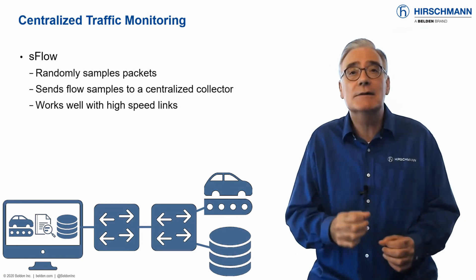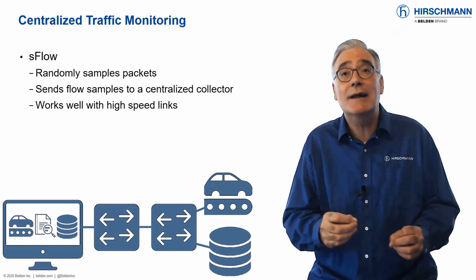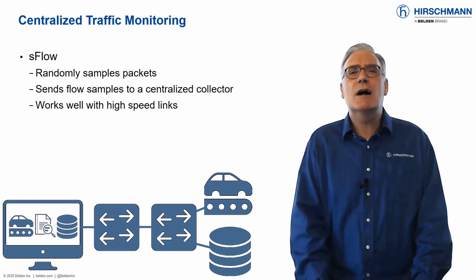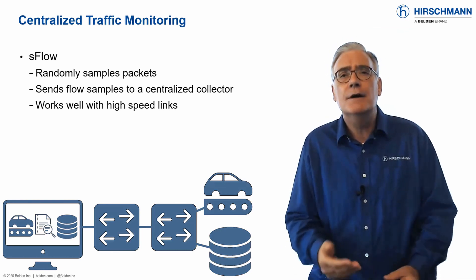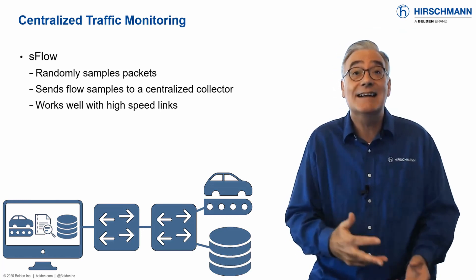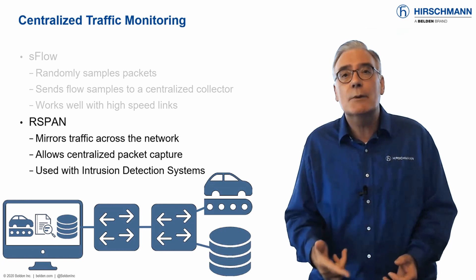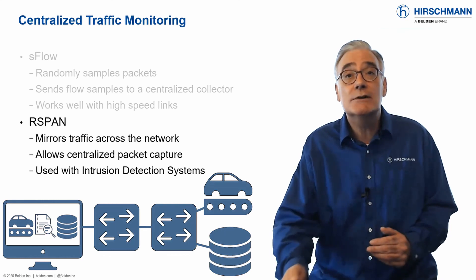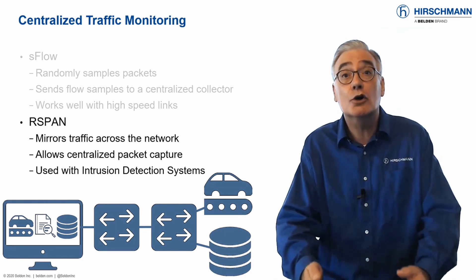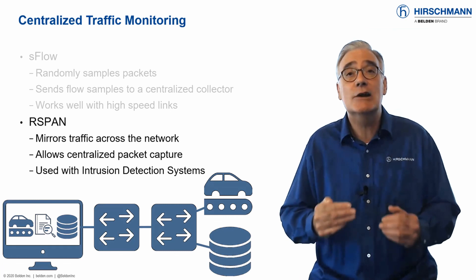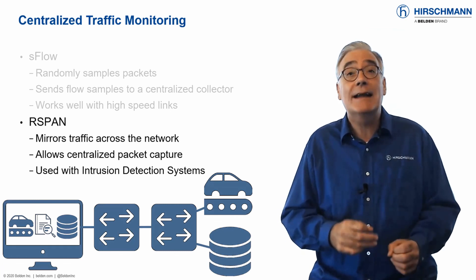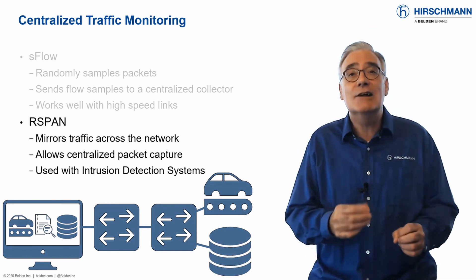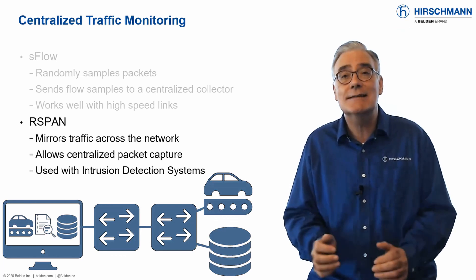sFlow randomly samples data packets and sends the samples to a central sFlow collector for analysis. Random samples are normally enough to detect irregular network activity. Remote switch port analyzer, known as RSPAN, allows data from a remote switch to be copied across the network to a local destination port. As every packet is copied, this makes RSPAN an excellent tool to be used in conjunction with intrusion detection systems.